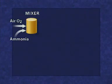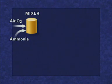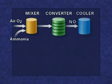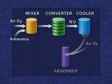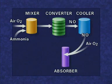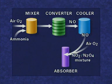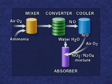The raw materials for making nitric acid are ammonia and air. In the converter, nitrogen monoxide is formed. This is cooled and reacts with more air to produce a mixture of nitrogen dioxide and dinitrogen tetroxide. These gases are absorbed in water to produce nitric acid.